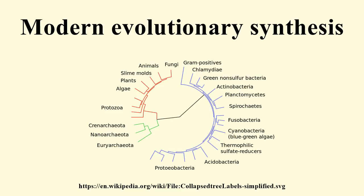Weismann's idea was that the relationship between the hereditary material — which he called the germplasm — and the rest of the body was a one-way relationship. The germplasm formed the body, but the body did not influence the germplasm, except indirectly in its participation in a population subject to natural selection. Weismann was translated into English, and though he was influential, it took many years for the full significance of his work to be appreciated. Later, after the completion of the modern synthesis, the term neo-Darwinism came to be associated with its core concept: evolution driven by natural selection acting on variation produced by genetic mutation and genetic recombination.